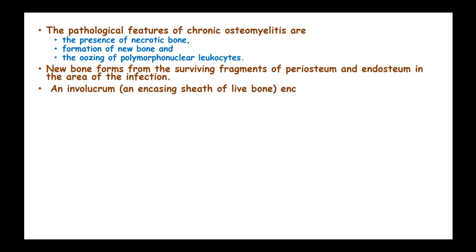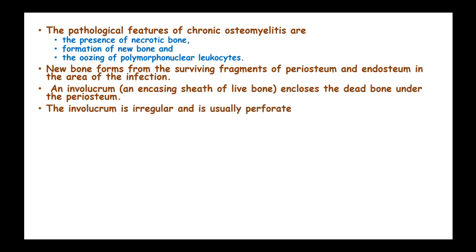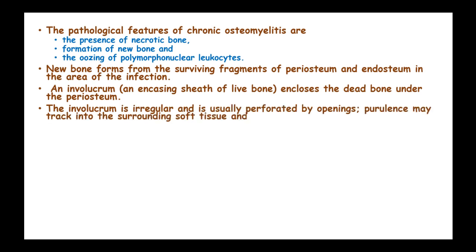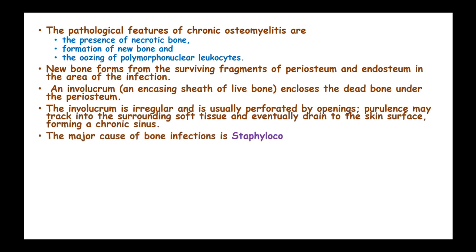An involucrum, which is a sheath of live bone, encloses the dead bone and the periosteum. This involucrum is irregular and usually perforated by openings; pus may track into the surrounding soft tissue and eventually drain to the skin surface, forming a chronic sinus.